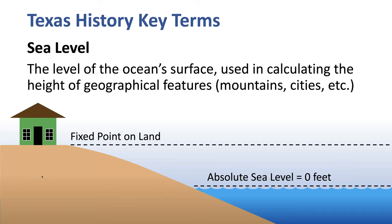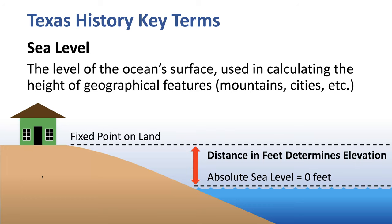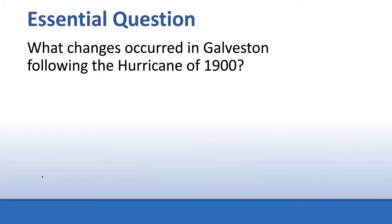You find a fixed point of land and measure the distance between absolute sea level and that fixed point, and that determines the elevation of a place in feet. Our central question today is: what changes occurred in Galveston following the hurricane of 1900?